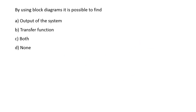Next: by using block diagrams it is possible to find — options are: output of the system, transfer function, both, none of the above. Block diagram is a technique for finding the transfer function of a given control system. So option B is the right answer.